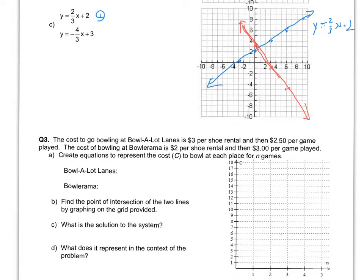Alright, question number three is an application. The cost to go bowling at Bowl-A-Lot Lanes is $3 per shoe rental, and then $2.50 per game. So its cost would equal $3 per shoe rental plus 2.5N, where N is the number of games. So Bowlerama, on the other hand, is a cost of $2 and then $3 per game.